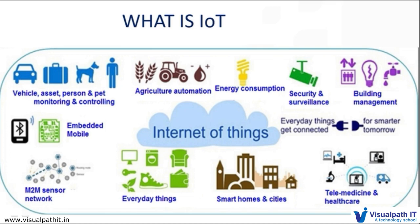In simple words, Internet of Things is an extension of Internet connectivity into physical devices and everyday objects embedded with some electronics, Internet connectivity, and other forms of hardware. These devices can communicate and interact with each other over the Internet, and they can even be remotely monitored and controlled.